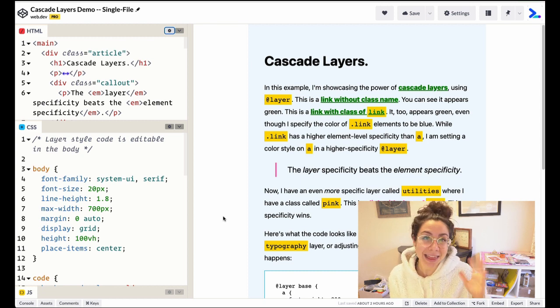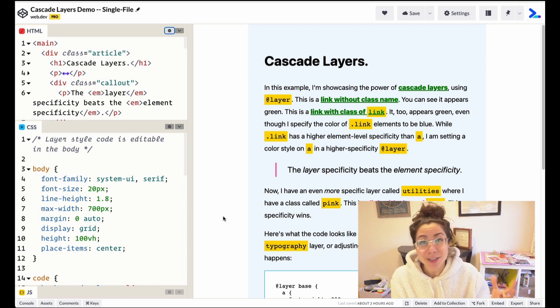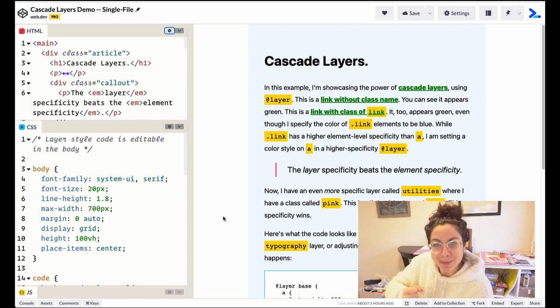So Cascade Layers allow for you to create specificity based layers and help organize your CSS architecture. This is something that previously wasn't possible and we had to rely on selector specificity or the important rule, or we just stamp important on something to get it to be seen.